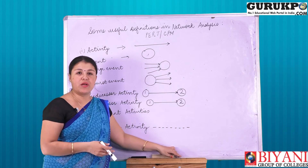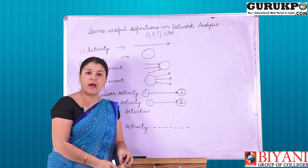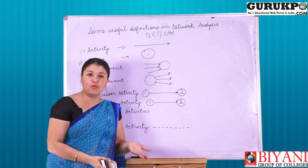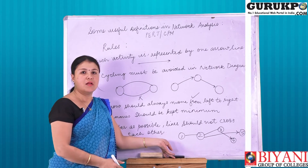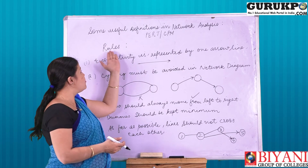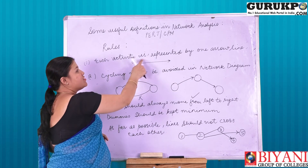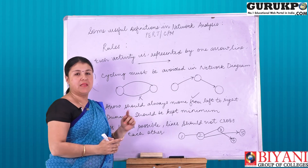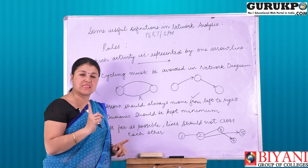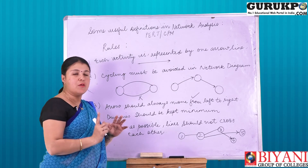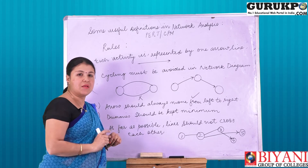Now, some more important points in connection with PERT and CPM that are required to be known — the rules. The first rule is: each activity is represented by one arrow line. That is, we represent one activity by a single line. We cannot represent two activities indicating the same line.